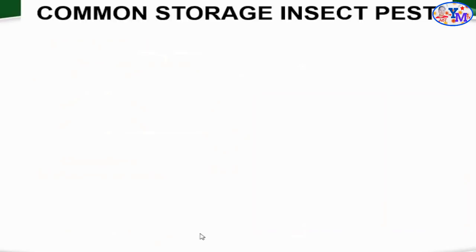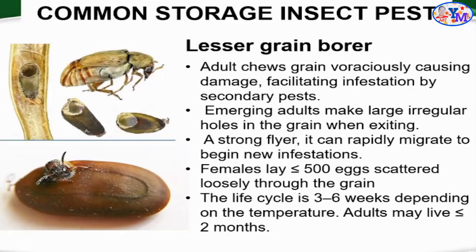A common insect pest in storage facilities is the lesser grain borer. The adult chews on grain voraciously, causing damage and facilitating infestation by secondary pests. The lesser grain borer is a primary pest — it enters seeds and consumes the endosperm. Secondary pests feed only on the surface area of seeds. Once secondary pests feed, lesser grain borers then enter, making them the most damaging — they can reduce the quantity and quality of stored seeds and affect production.